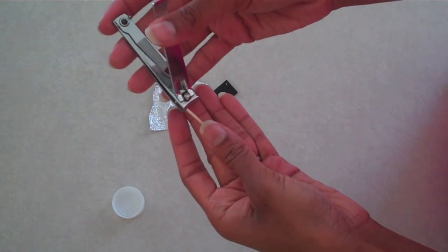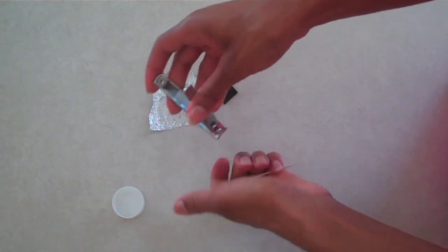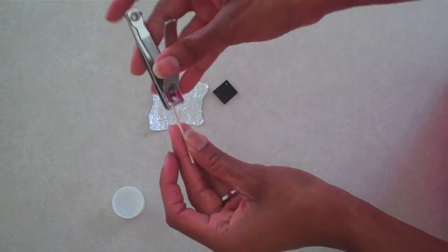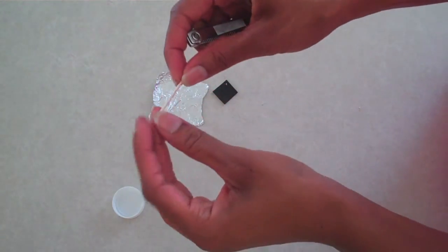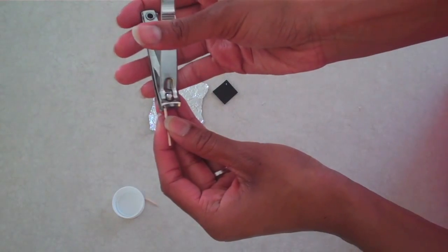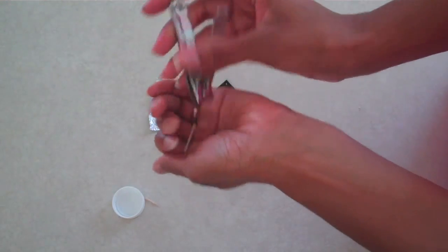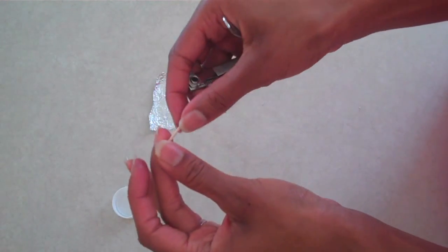Take your toothpick and cut off the pointy parts and just make enough that you could use for a handle. About so, that's probably still too long. About there.